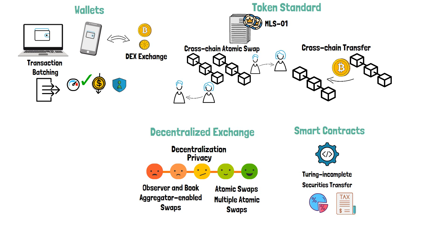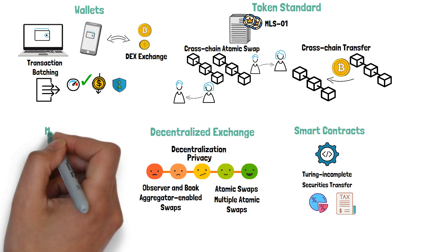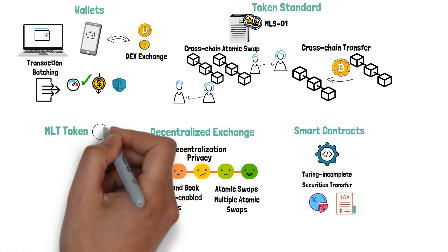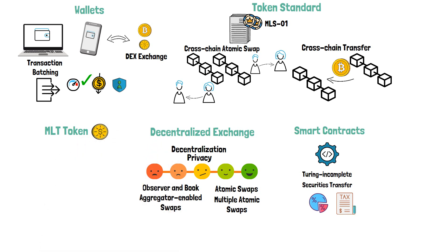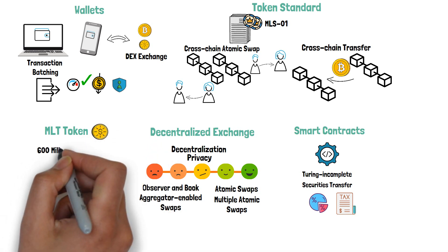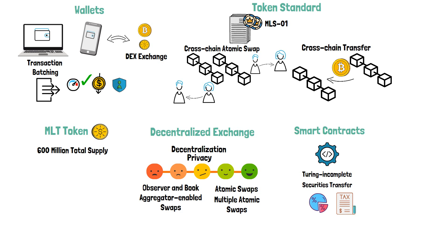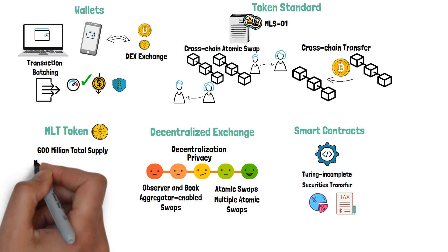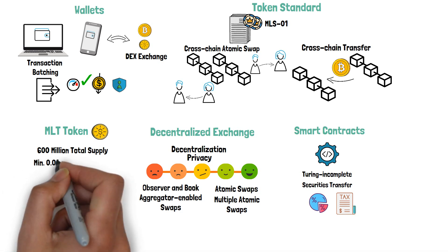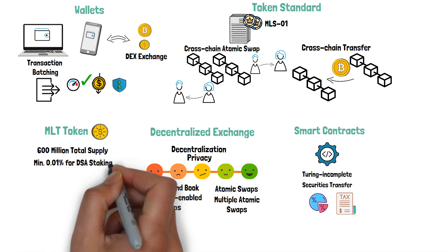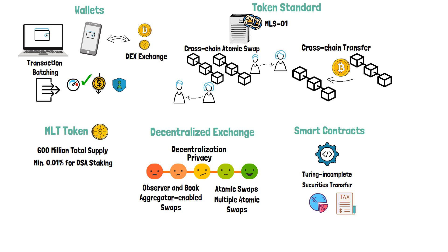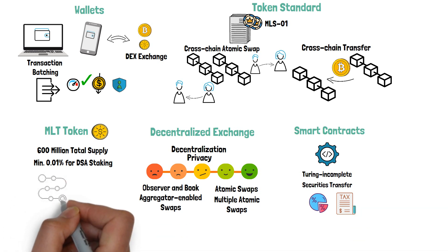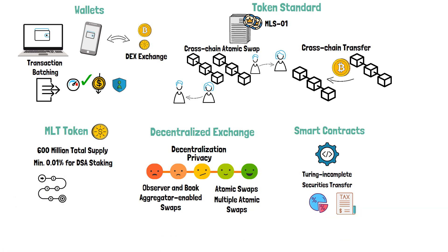Last but not least, there is the MLT token. The MLT token serves as a utility token on MintLayer. 600 million MLT tokens will be created, and token holders who stake more than 0.01% of the total token supply can participate in the DSA consensus and create new MintLayer blocks. The MLT token also allows holders to express their views on the MintLayer roadmap and to suggest new blockchain features.